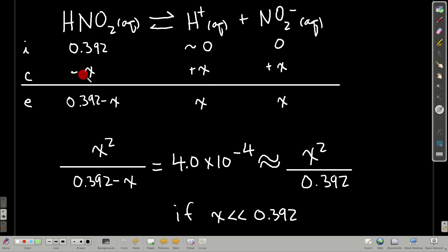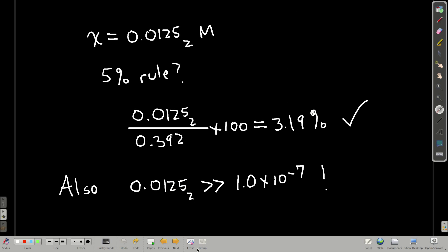So we set up our ice table. Minus X for nitrous acid plus X for hydrogen ion and nitrite. So at equilibrium, we have these guys. Plugging them into the equilibrium constant expression, just like before, there's our K. We get X squared over 0.392 minus X. And just as before, might as well try to make our lives easier and see if we can neglect X in the denominator here and say it's about X squared over 0.392. And we can say this if X is a lot smaller than 0.392, and we're going to check that once we get our X this way by the 5% rule. So, solving for X and neglecting X compared to 0.392, I get 0.0125. Was that a good assumption that we neglected it compared to 0.392? Well, take that, divide by 0.392 times 100 to get 3.19%. Yep, that's less than 5%. That was a good assumption.